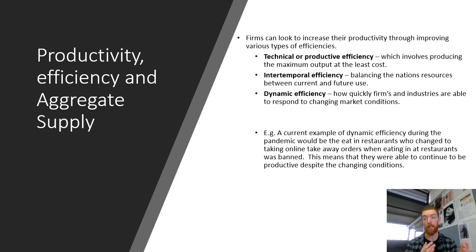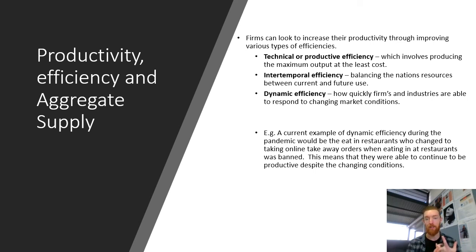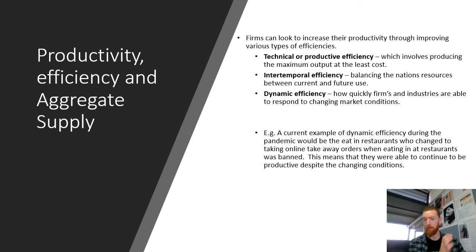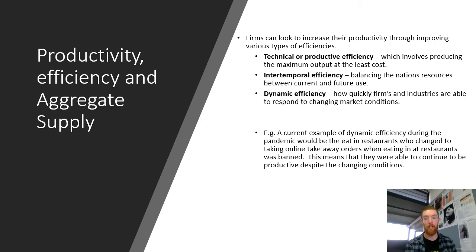Dynamic efficiency — how quickly firms and industries are able to respond to changing market conditions — is incredibly important, especially right now during the pandemic. An example: restaurants that would normally only offer dine-in have shifted to online takeaway orders and deliveries when eating in was banned, allowing them to continue being productive despite changing conditions. A local pub-restaurant called The Plough transitioned to online orders and maintained a large percentage of their business. That's an example of being dynamically efficient — market conditions changed and they adapted accordingly.